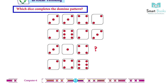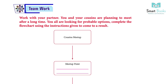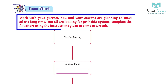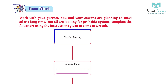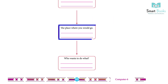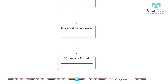Critical thinking: which dice completes the domino pattern? Answer: students will do it themselves. Teamwork: work with your partner. You and your cousin are planning to meet after a long time and are looking for probable options. Complete the flowchart using the instructions given to come to a result. Cousin meetup — meetup point: the place where you would go, who wants to do what. Answer: students will do it themselves.